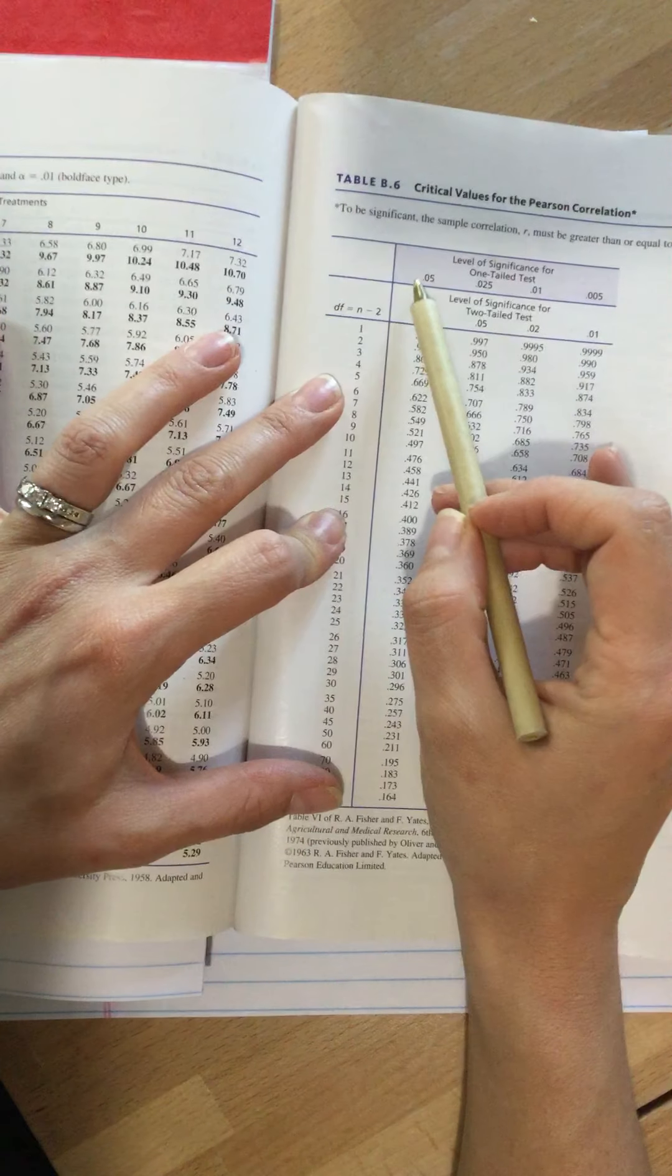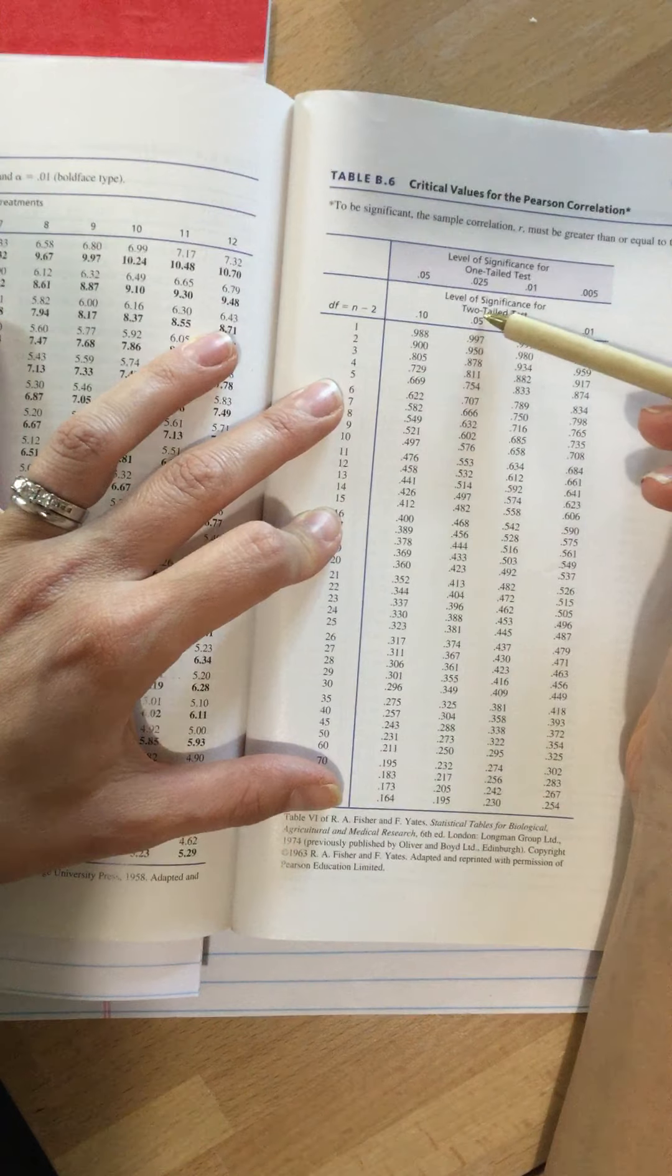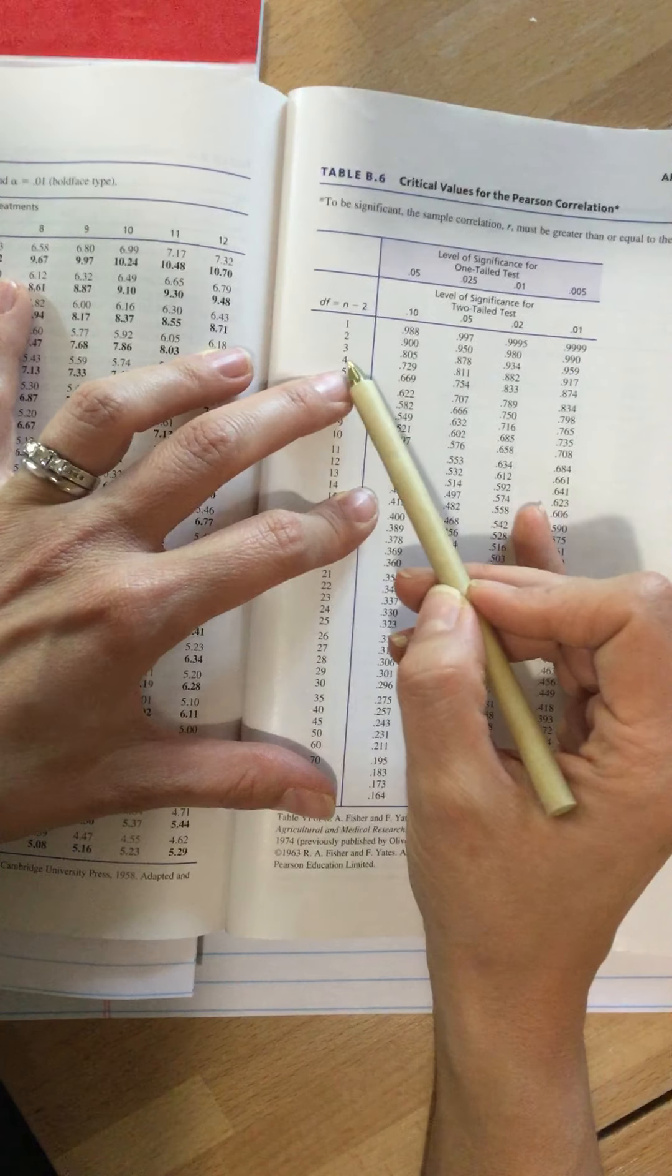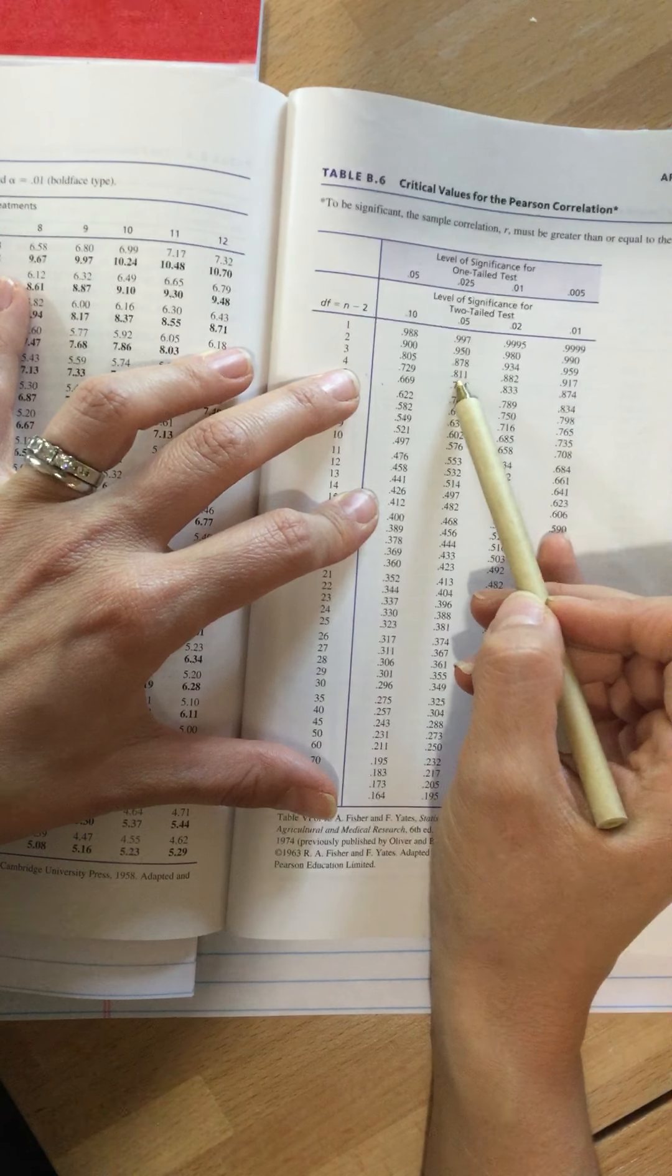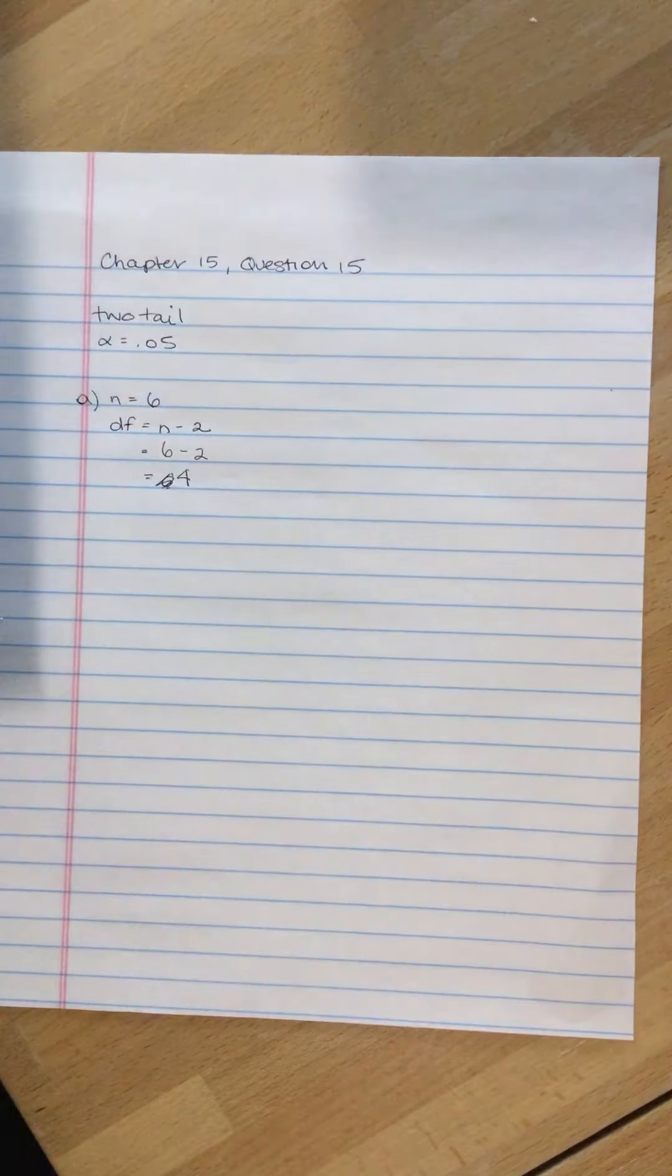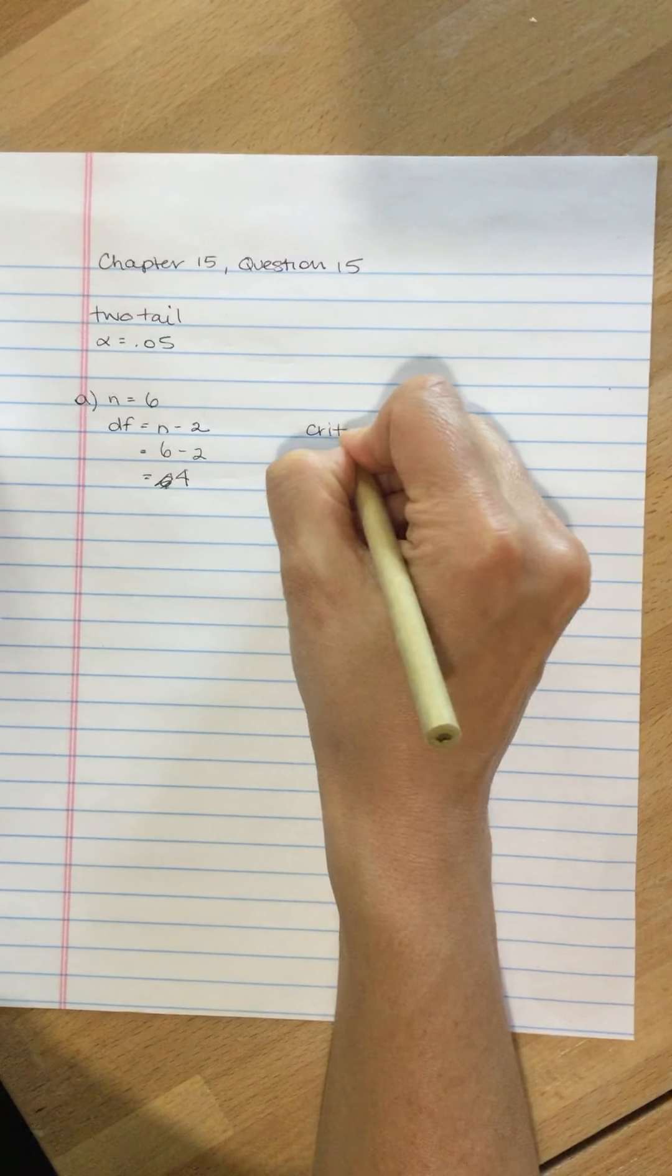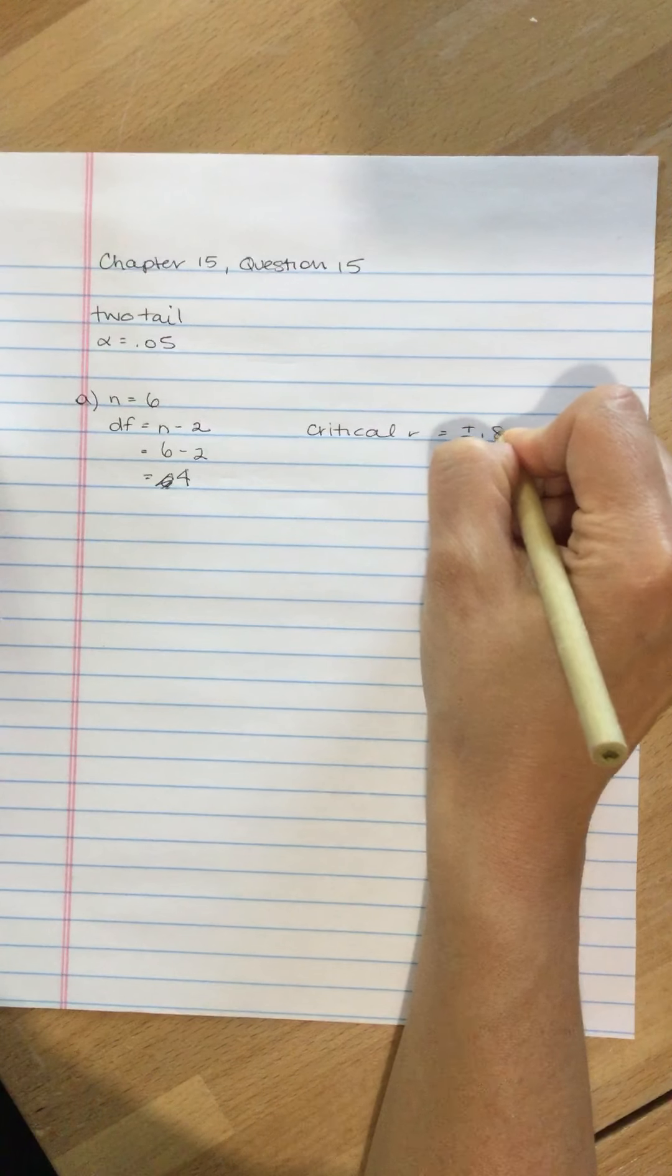Level of significance for a one-tailed test? No, we've got a two-tailed test. We wanted an alpha of 0.05, so we're going to be looking in this column, and we had a degrees of freedom of 4. The value that we need to get is R is plus or minus 0.811. So the critical R is plus or minus 0.811.